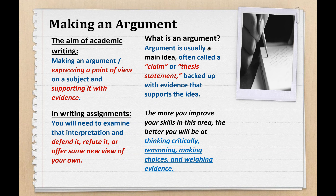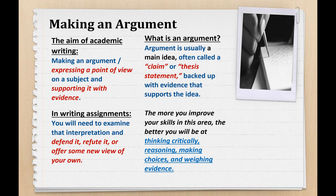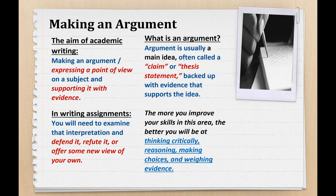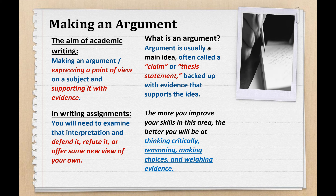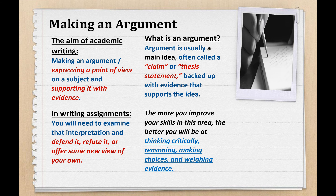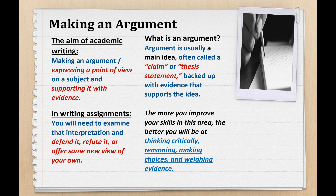So first of all, what is an argument? An argument is usually a person's stance about something — it's your main idea, which is often called a claim. It is also known as a thesis statement, but we'll deal with that in the lesson on how to write argumentative essays. Basically, in order for a claim to be an argument, you need to back up your claim with evidences. When you have sufficient support for your claim, only then does it turn into an argument.